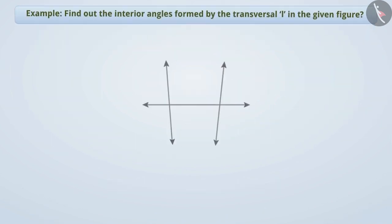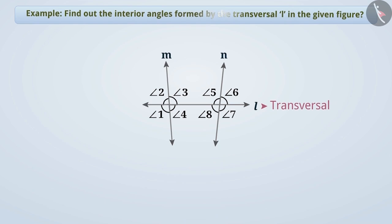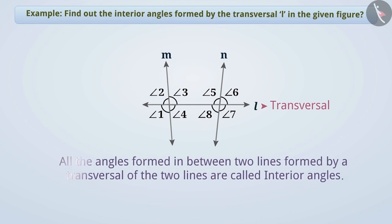Next example: in the given figure, line L is the transversal of line N and line M. Find out the interior angles formed by the transversal L. In the previous video, we learned that all the angles formed in between two lines by a transversal are called interior angles.